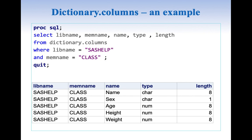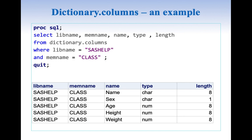Let us understand this by an example. Here we are looking at the sashelp.class table. When I do a query on dictionary.columns — select libname, memname, name, type, length from dictionary.columns where libname equals 'SASHELP' and memname equals 'CLASS' — it gives the information about sashelp.class columns: the libname is SASHELP, memname is CLASS, and we get information about column names, data types, and length. The important point is that column name information can be wrapped up in a macro variable and we can use this macro variable to compare with external files.